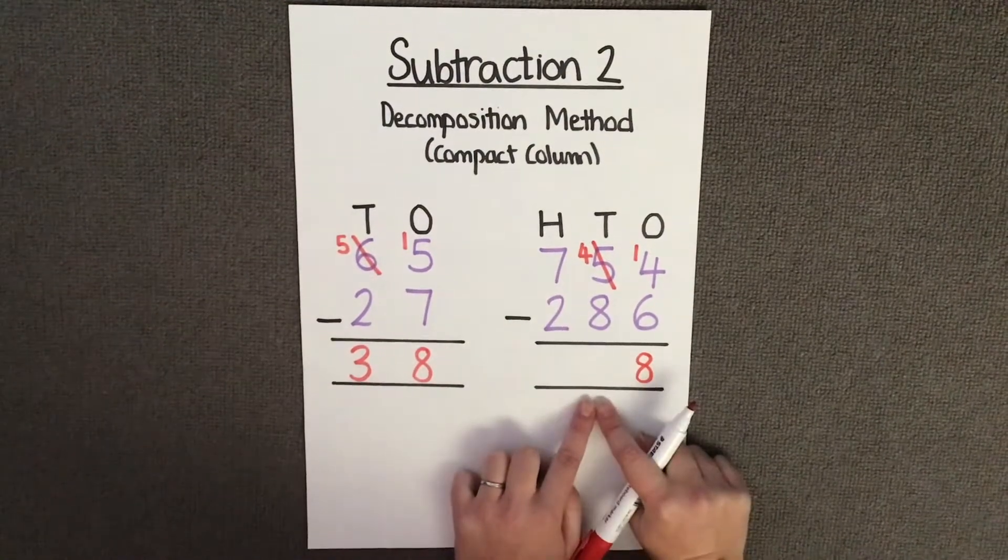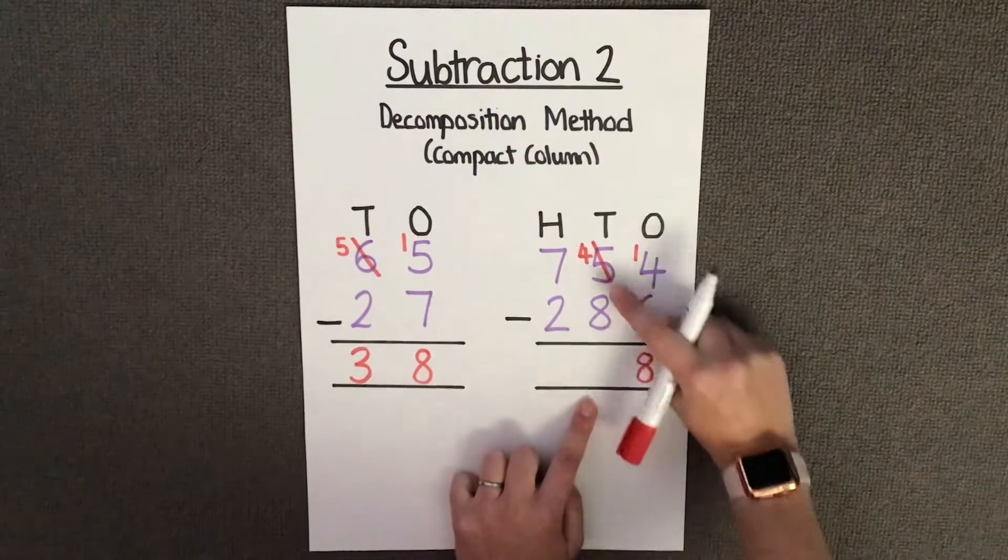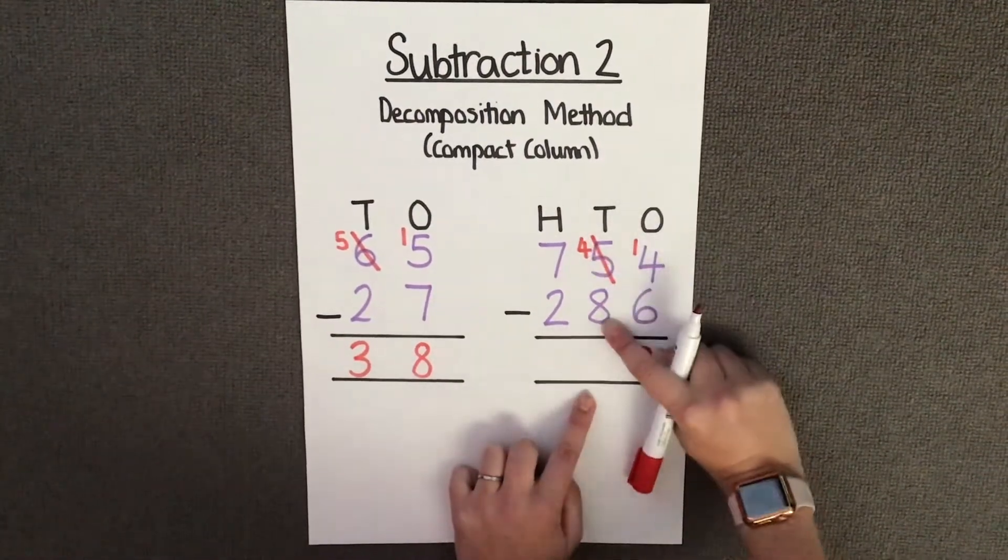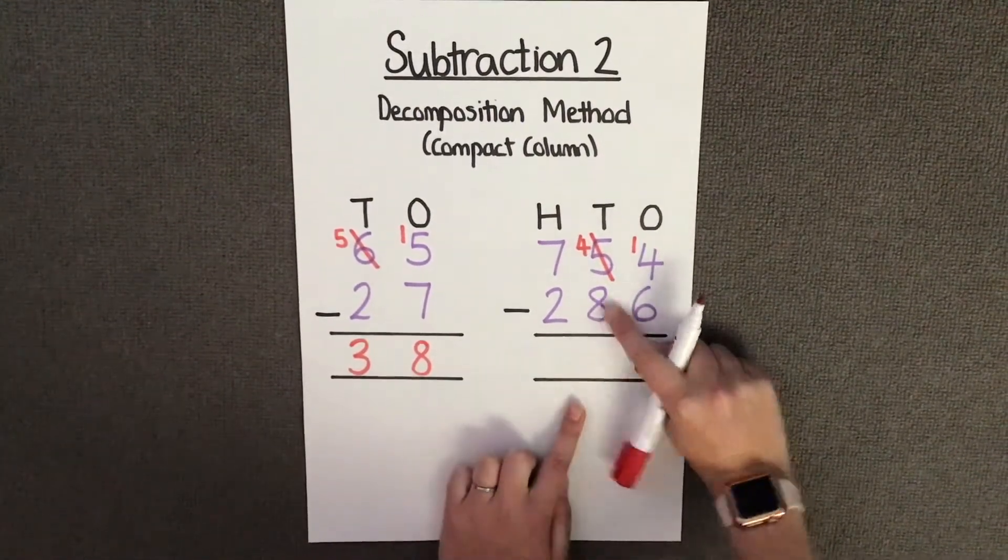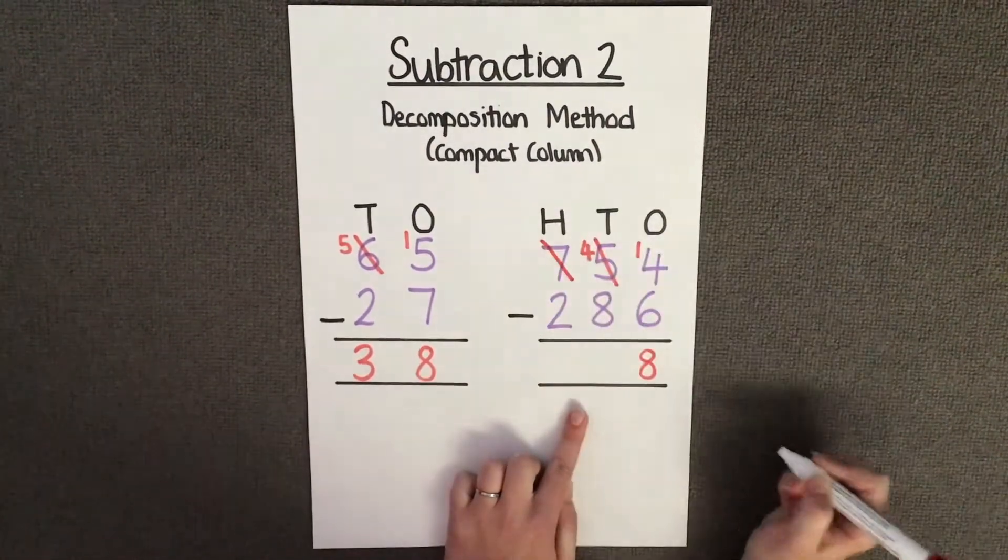Now I'm going to subtract my tens. I have 4 tens, take away 8 tens. Again, I do not have enough tens to take away 8, and therefore I have to borrow from my column next door, or borrow from my hundreds. I'm going to take 100 from it, which leaves the hundreds column with 6 hundreds.